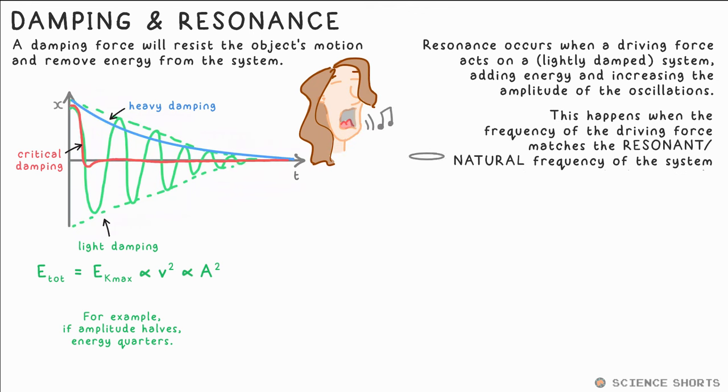Maximum resonance happens when the frequency of the driving force matches the natural or resonant frequency of the system. That's the frequency it would oscillate at without the driving force. The driving force frequency can also be a multiple of the natural frequency, and you'll still get substantial resonance.